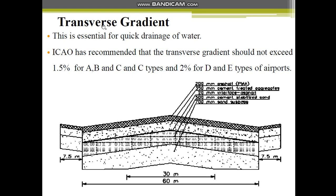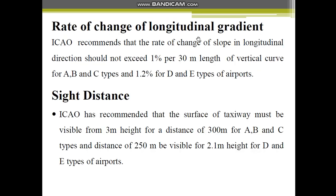The transverse gradient is the slope across the length of the taxiway. It is essential for quick drainage of water so that water does not get locked on the taxiway. ICAO has recommended that the transverse gradient should not exceed 1.5% for Type A, B, and C airports and 2% for Type D and E airports.